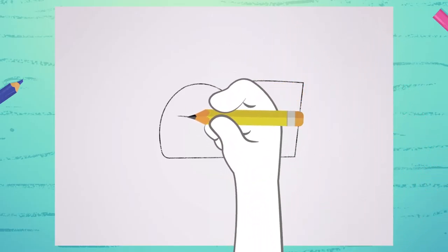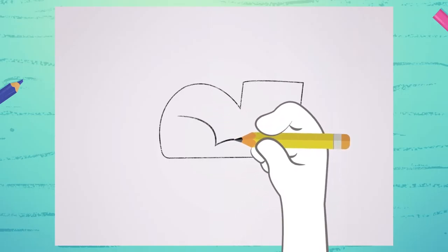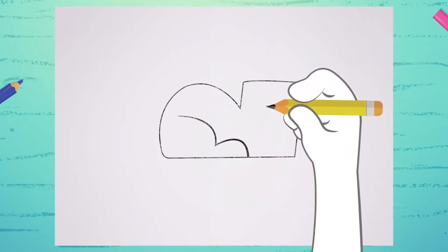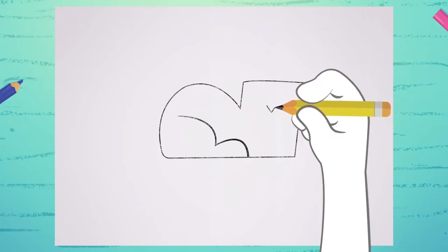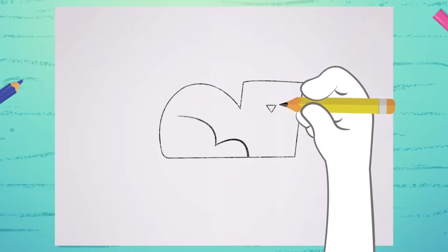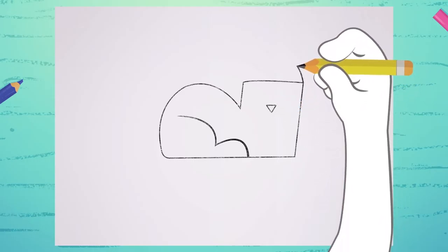Right here, you draw the seagull, like this, with one wing longer than the other. Here, you draw the triangle upside down, two here on top.